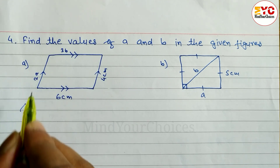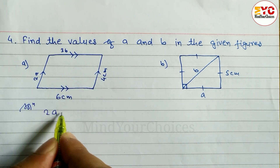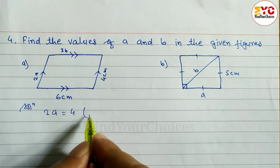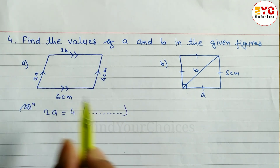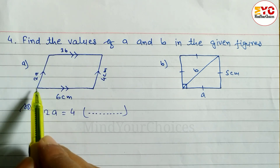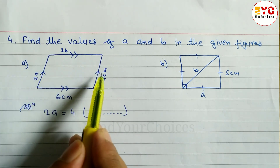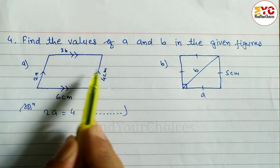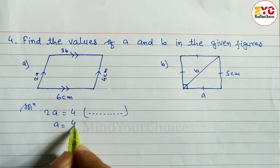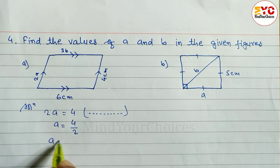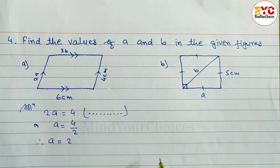Let's take a start. Here we can write 2a is equal to 4. The reason we have to write is that opposite sides of a parallelogram are equal. Since this is in multiplication, we have to divide: 4 divided by 2. Therefore a is equal to 2.